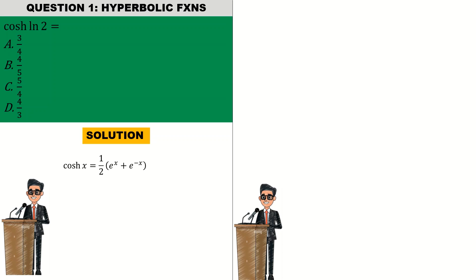For the solution, first we give the definition of the cosine of x which is half into e to the x plus e to the negative x. We note an identity which is e raised to the power ln of a is equal to a, provided a is greater than zero. We want to look for the cosh of ln 2, so we simply see that we have replaced x with ln 2 in the expression of cosh of x.